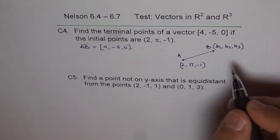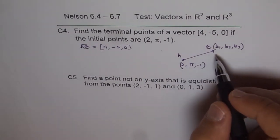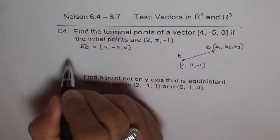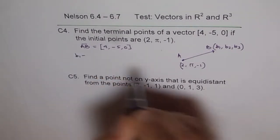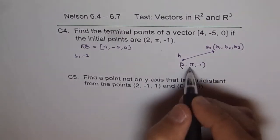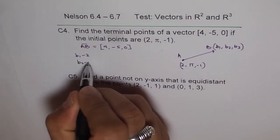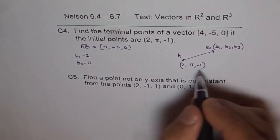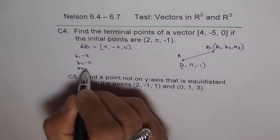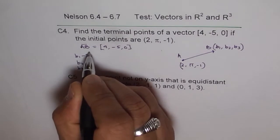So what is AB? AB is B minus A, right? So what we can do is, we do b₁ minus 2, b₂ minus π, b₃ minus (-1). Minus of minus 1, so it becomes plus 1. So that is AB.